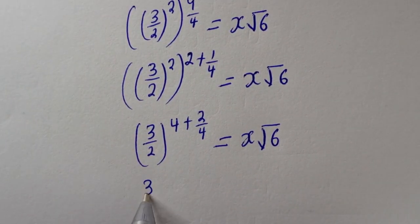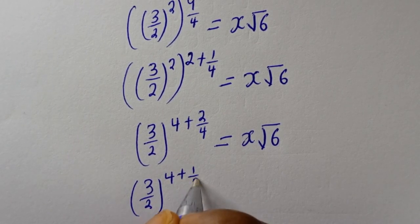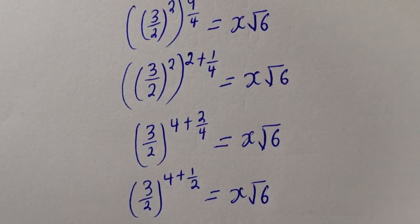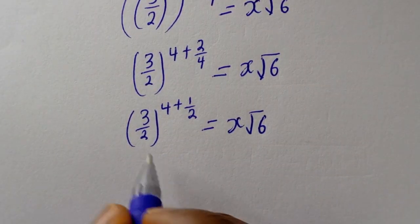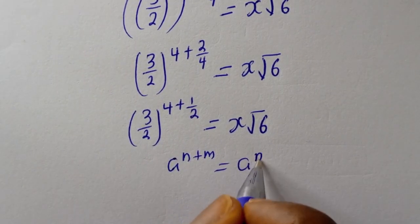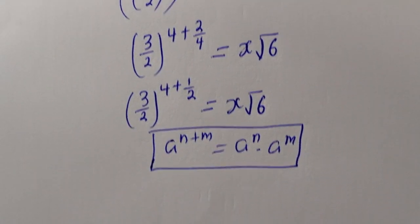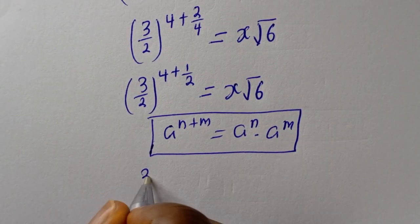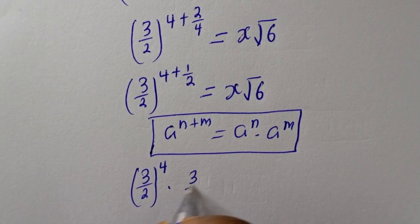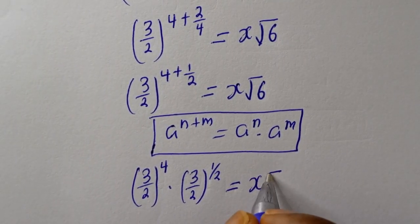Now, if you have a raised to the power n plus m, this is equal to a raised to power n multiplied by a raised to power m. Then this is 3 over 2 to the power of 4 plus 1 over 2, which can be written as 3 over 2 to the power of 4 multiplied by 3 over 2 to the power of 1 over 2, is equal to x square root of 6.